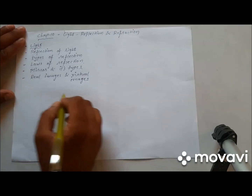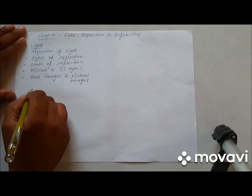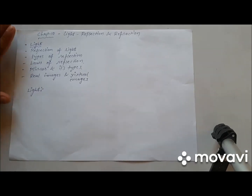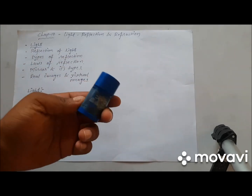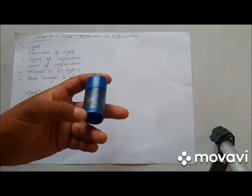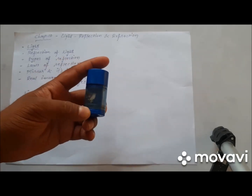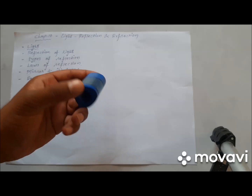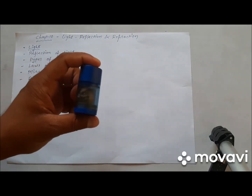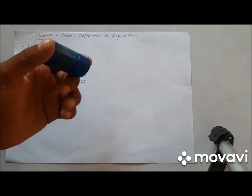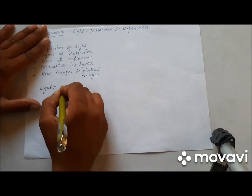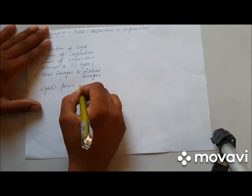Let's start with the first topic: what is light? If an object is placed in front of you, we are able to see it. But if there is darkness or if you close your eyes, we are not able to see the object. So in the dark there is absence of light. Light makes us able to see the object. So what is light? Light is a form of energy.